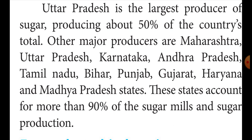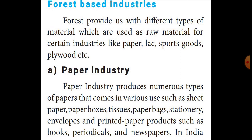The second important type of industry is the forest-based industry. Forests provide different types of raw materials used in industries such as the paper industry, lac, sports goods, and plywood. One of the most important forest-based industries is the paper industry.